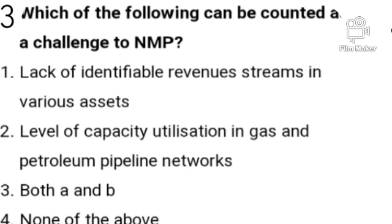Question number three. Which of the following can be counted as a challenge to NMP? Option A: Lack of identical bulk revenue streams in various assets. Option B: Level of capacity utilization in gas and petroleum pipeline networks. Option C: Both A and B. Option D: None of the above. Option C is the correct answer — both A and B.